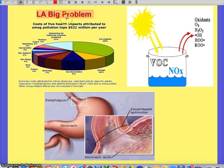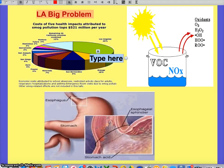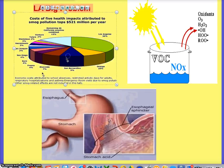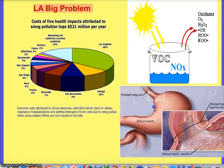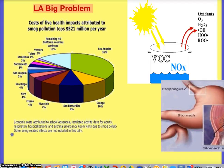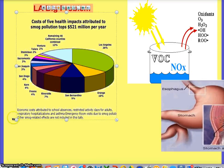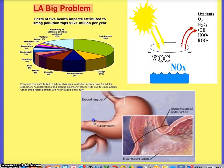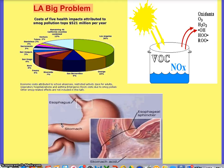Los Angeles had one of the largest reported cases of photochemical smog. It cost 520 million dollars per year in health impacts, and this map shows how many students had to miss school due to respiratory infections from smog. Los Angeles represents the biggest part of that graph — California in general was bad. They actually had the largest green movement of any state in the US because of this and other factors.